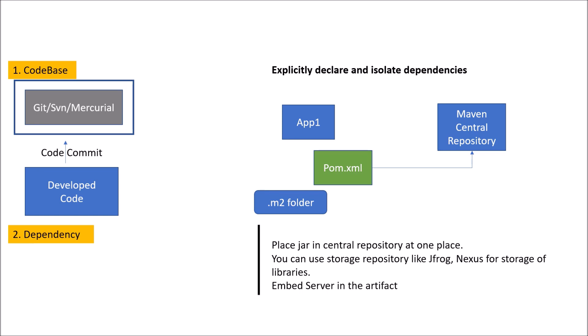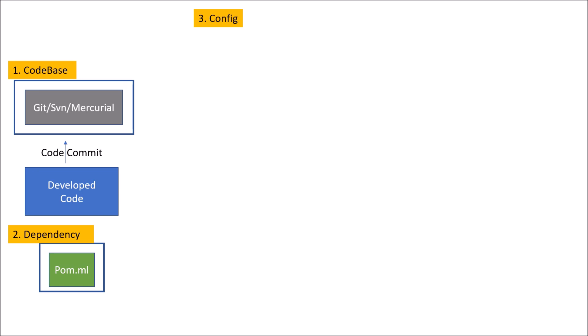Moving to the next factor: configuration. Configuration is an important aspect. In a monolithic application, we put configurations as part of an XML file that is part of your code. This config factor says: store the config in the environment. The configuration doesn't mean only server configuration or application properties. It could also mean backing service configuration, how you attach backing services, and your DB credentials — which could differ for different environments.